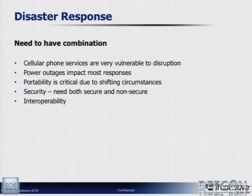The use of laptops is important, and the use of amateur radios is extremely important as well. There's no reason to take one solution over another — when you're talking about natural disasters, you're talking about redundancy. Cell phone services are very vulnerable to disruption. Power outages impact most responses from both emergency services and citizens. Portability is extremely critical because circumstances will change — new storm fronts, new waves of disaster. And there needs to be interoperability. This is a serious problem identified by the government as well. During Katrina, a lot of organizations had no way of communicating with each other.